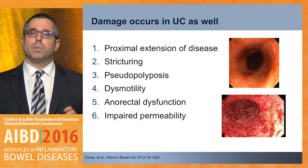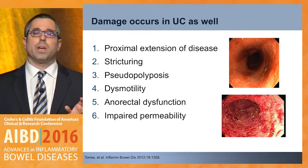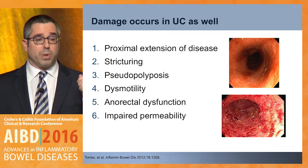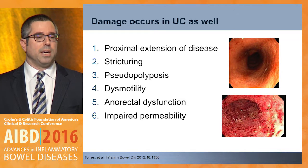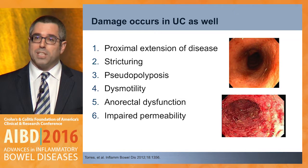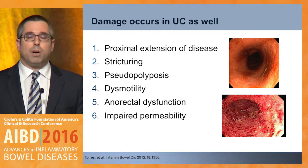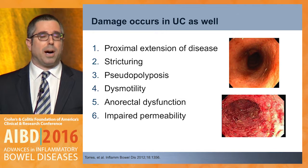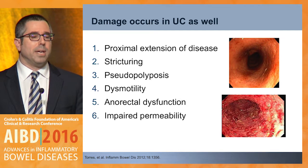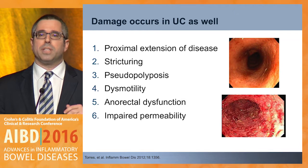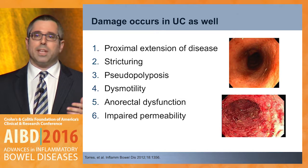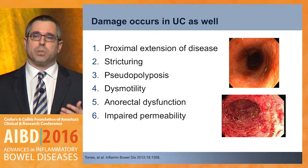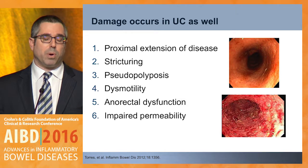Damage doesn't only occur with Crohn's disease. John Fred and his group has taught us that damage occurs in ulcerative colitis as well. It may not be quite as obvious, but we can have proximal extension of disease that can be very difficult to treat. Stricturing ulcerative colitis is not always cancer — it can be progression of disease and damage. Pseudopolyposis can be a real problem when you find adenomatous polyps in a field of pseudopolyps that are very difficult to treat. Dysmotility, anorectal dysfunction, and impaired permeability account for patients you don't understand why they're having so many symptoms — in fact, a lot of it is damage from ulcerative colitis because we didn't treat their disease aggressively early and let things progress to the point of no return in many cases.